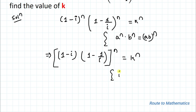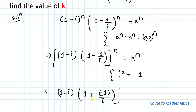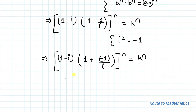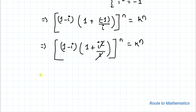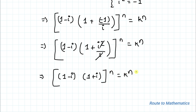We know that i² equals -1, so we can write (1 - i) multiplied with (1 + i²/i)^n equals k^n. Substituting i² gives us (1 - i) multiplied with (1 + i²/i). Since i² divided by i simplifies, iota and iota-squared cancel out, giving us (1 - i)(1 + i) whole to the power n equals k^n.